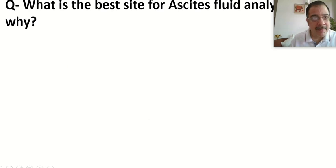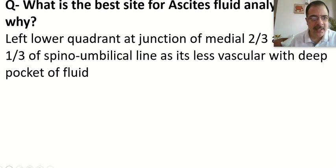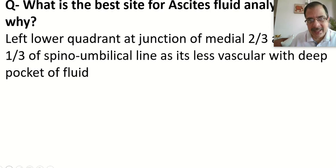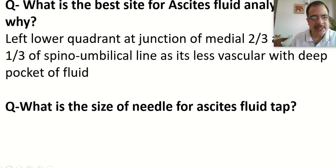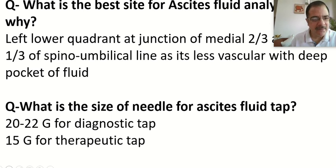The best site for needle insertion during ascitic tap is the left lower quadrant, specifically at the medial two-thirds and lateral one-third of the spinoumbilical line — the oblique line drawn from the umbilicus towards the anterior superior iliac spine. This site is chosen because it is less vascular and provides a deep pocket of fluid, giving high yield. The right side is not contraindicated but the left is preferred. For diagnostic tap, a 22G needle is used; for therapeutic tap, a 15G needle is used.